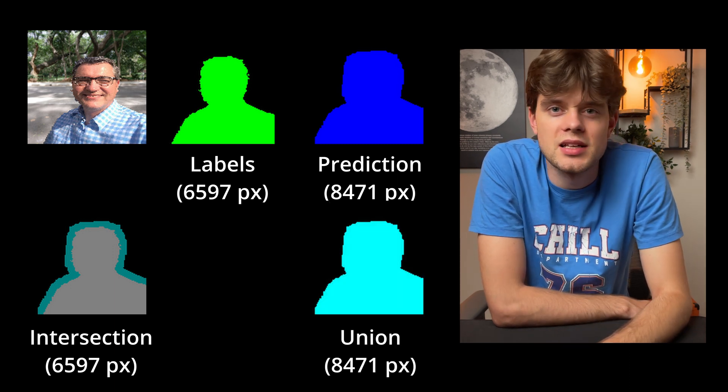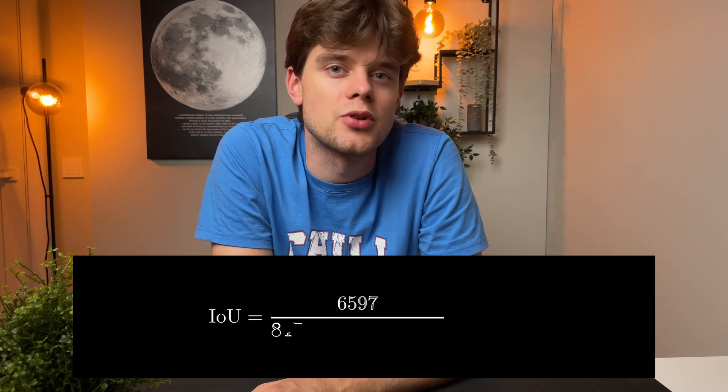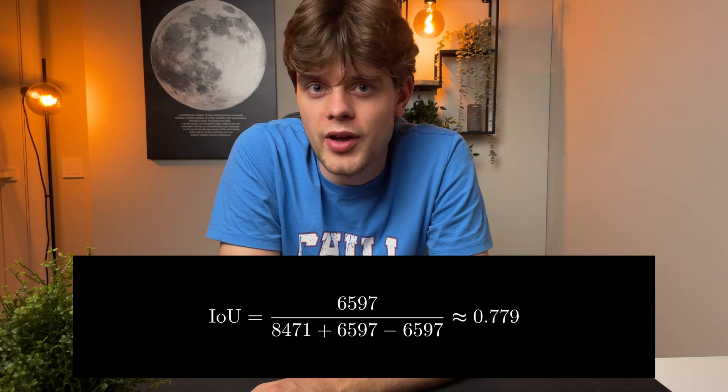That's basically it — we plug those values into the formula and we get our IoU value. An IoU of 1 is perfect, though it is more theoretical as it is extremely hard to achieve. A value of 0.5 and higher may be reasonable in some cases, especially for object detection. But as always, it depends on what you are trying to achieve.